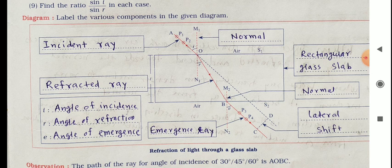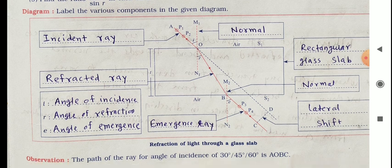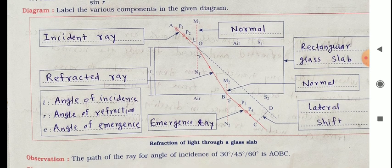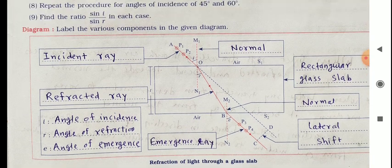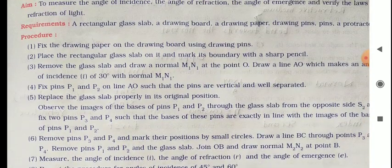Join OB and draw the normal M2, N2 at point B. Measure the angle of incidence I, the angle of refraction R, and the angle of emergence E. Repeat the procedure for angles of incidence of 45 degrees and 60 degrees.